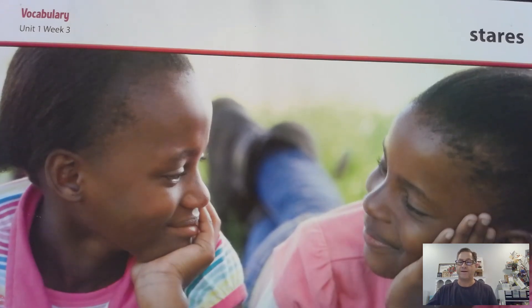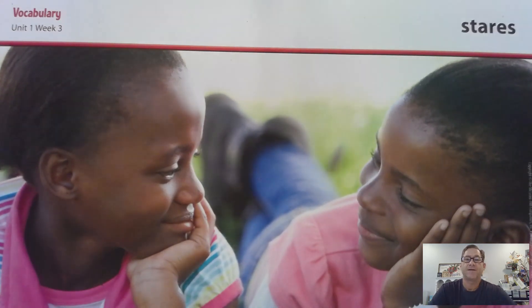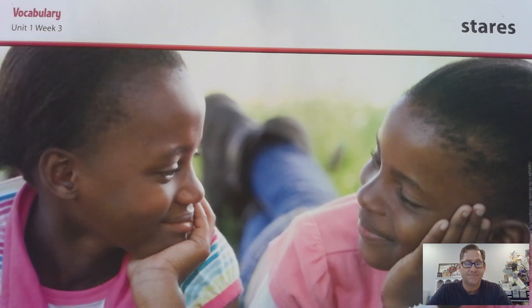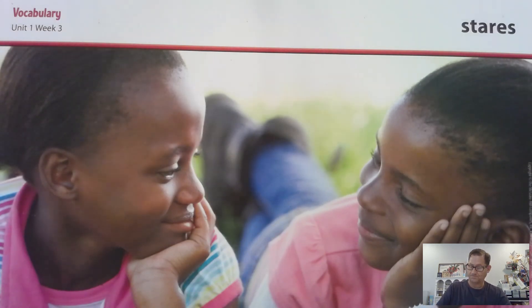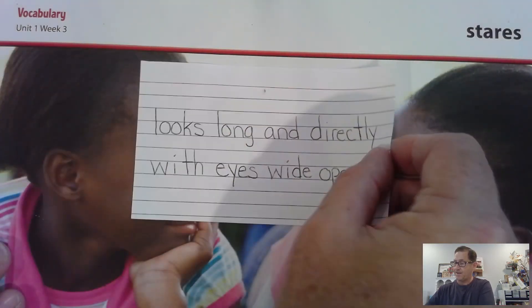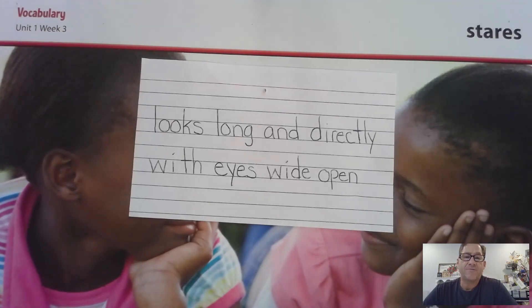The next word in our selection this week is stares. Say that word with me: stares. When someone stares, he or she looks at something in a steady way with eyes wide open. For example, Helen stares at her friend. What do you look like when you stare at someone? Write stares on one side of your card, and on the other side write: looks long and directly with eyes wide open.